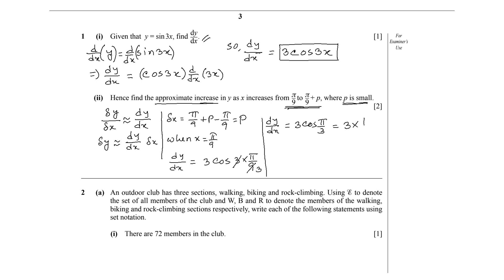But cos(π/3) is 1/2, so we can write 3 times 1/2, which is 1.5. Using these two values, we can write the approximate change in y—that is, the approximate increase in y is 1.5 times p, which means our δy equals 1.5p. So question 1 is done. Now let's move on to question 2.